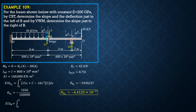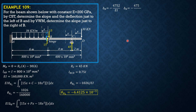So EI times delta_B equals the integral from 0 to 6 of 15x plus Px minus 18x squared, and the derivative of this moment equation with respect to P is x dx by Castigliano's second theorem. Since P is just invented, do not include Px in the integral. The integral of 15x minus 18x squared times x equals negative 4752 over EI. Dividing by 160,000, this gives negative 29.7 mm.